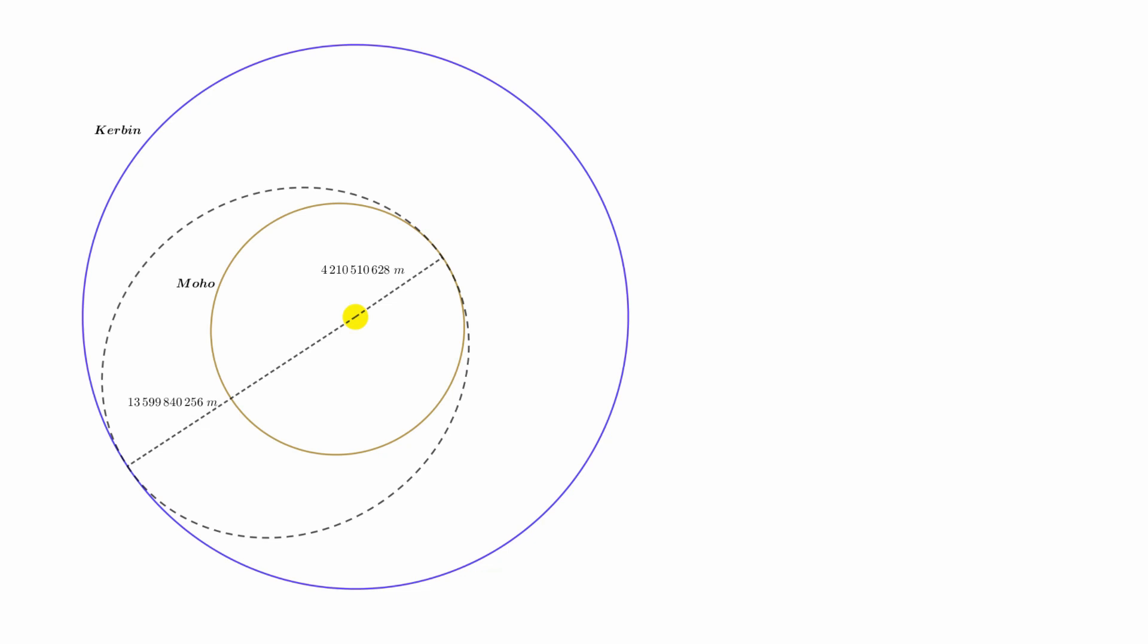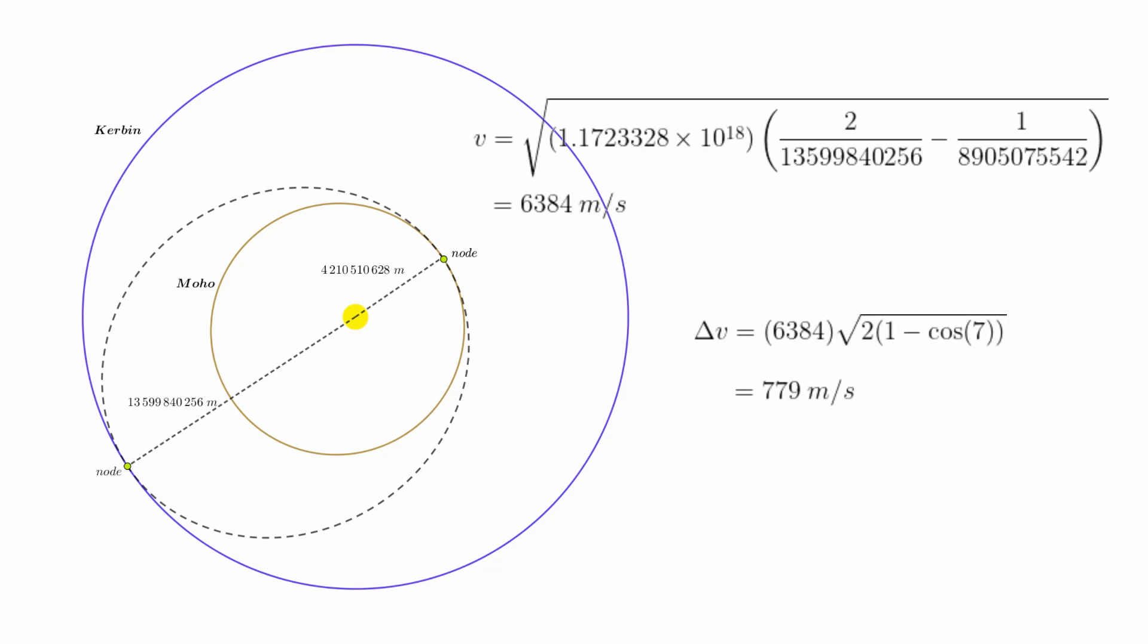If you can match Moho's inclination at periapsis, that means that one of the relative ascending or descending nodes was at periapsis, and as the other node is always at the opposite side of the orbit, that means you could have made the plane change at apoapsis of your transfer orbit right after leaving Kerbin's SOI. Your speed would be much lower here, in fact, if you work it out, the 7 degree inclination change here would only cost 779 meters per second. But now the double butt. This can't happen either.